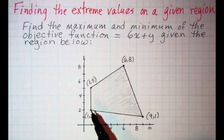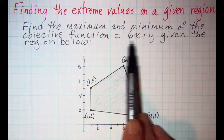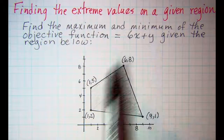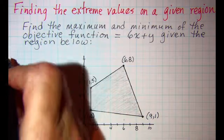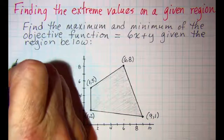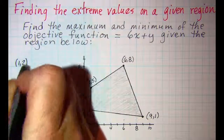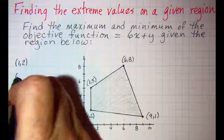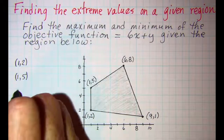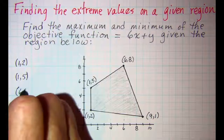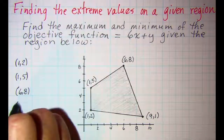What we need to do is calculate this function at each of these vertices. So we'll do the points: 1, 2 — then 1, 5 — then 6, 8 — and 9, 1.